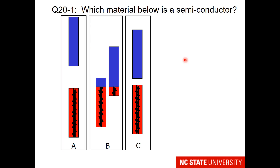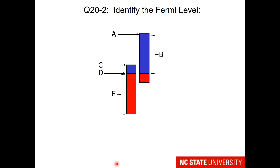Here are your student questions. Which picture below is the band diagram for a semiconductor? For this diagram, where the red area is full of electrons and the blue area has mostly empty orbitals, where is the Fermi level? You might also try to identify the valence band and the conduction band.